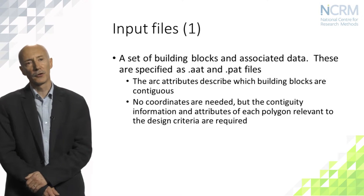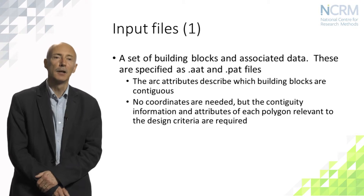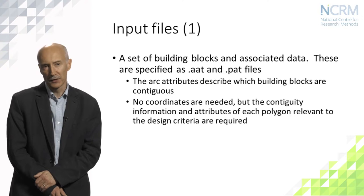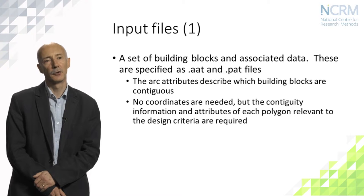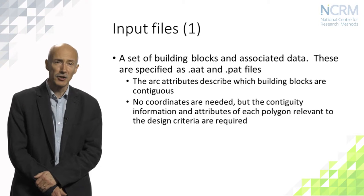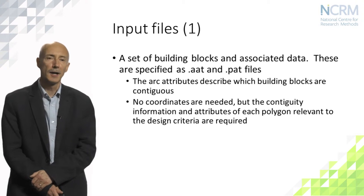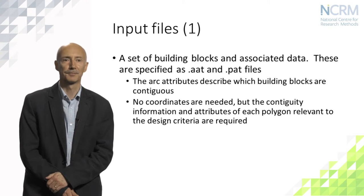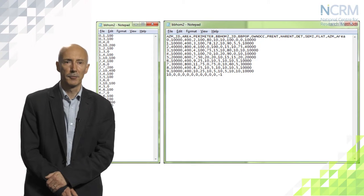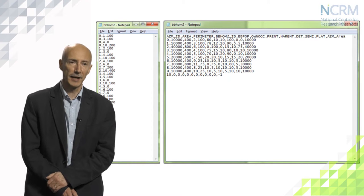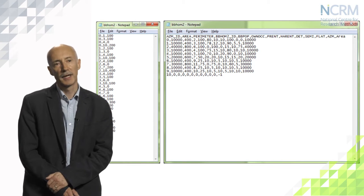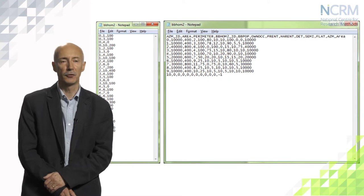The first of the input files are a pair which describe the building blocks and the associated data. They're specified by the .AAT and .PAT file extensions. They're actually plain text files, but they describe the arc attributes and the polygon attributes of the building block data. The arc attribute file explains which building blocks are next to which. In the left hand file here, we can see a series of records, each of which describes the boundary between two building blocks.